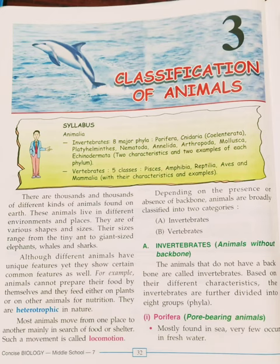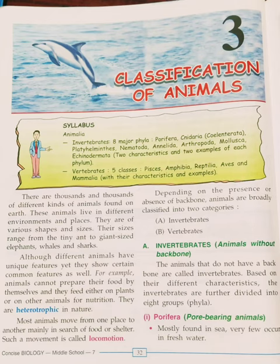Animals are called heterotrophic in nature. Most animals move from one place to another, mainly in search of food or shelter — such movement is called locomotion. Depending on the presence or absence of a backbone, animals are broadly classified into two categories: invertebrates and vertebrates. Animals without a backbone are called invertebrates, and based on different characteristics, invertebrates are further divided into eight groups called phyla.